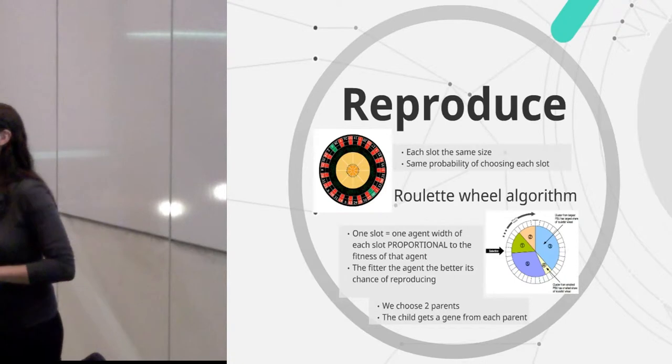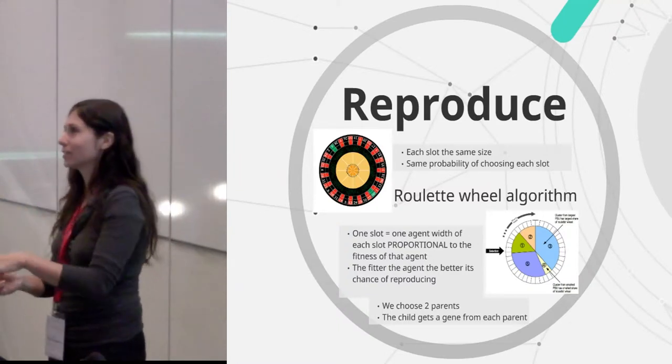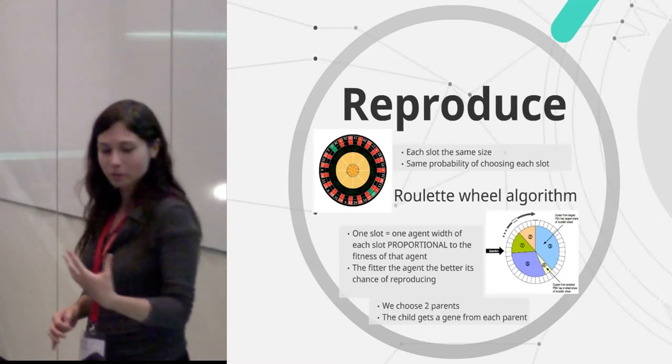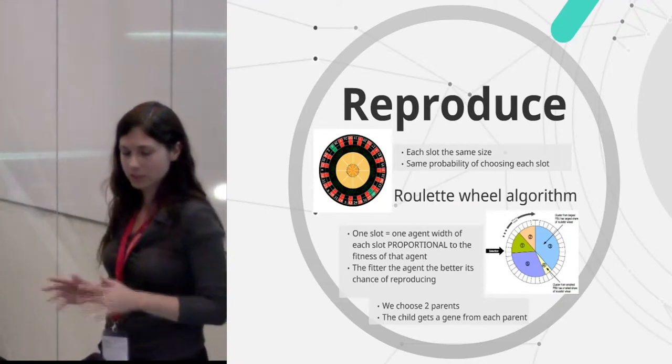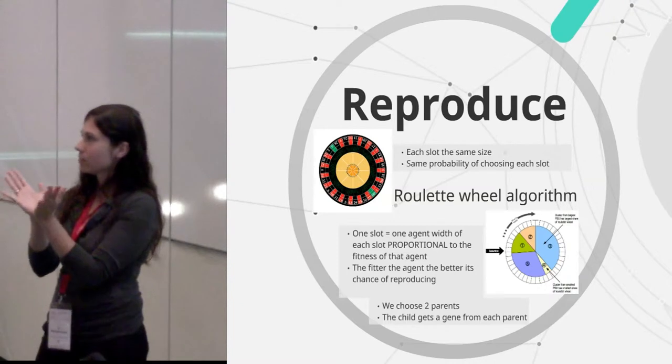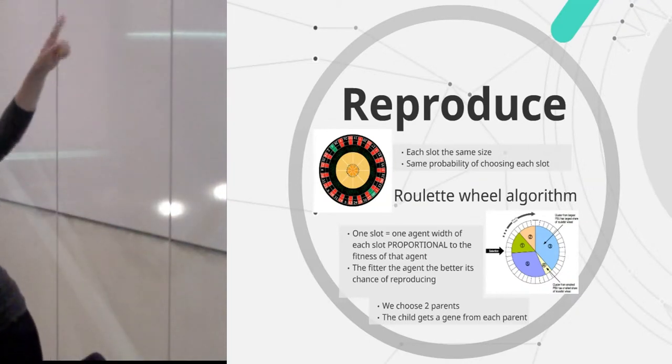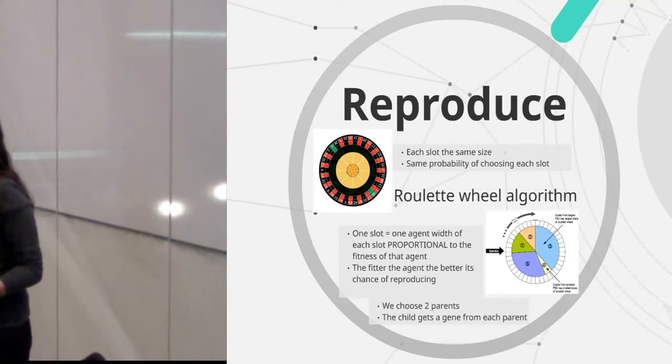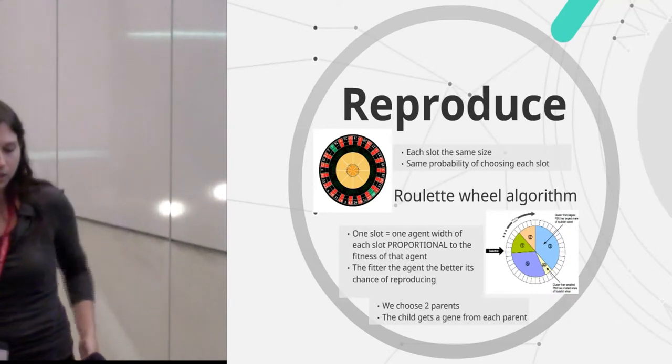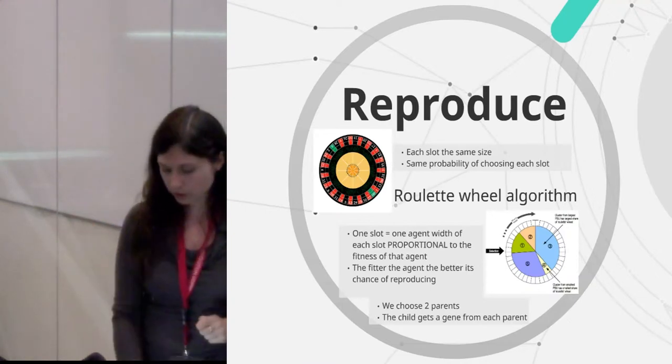And I used a very common algorithm used in computer science and in other disciplines called the roulette wheel in order to model the reproduction. So when you imagine a roulette wheel, a standard one, each slot has the same size, at least you hope because that's what you're putting your money on. So each slot has the same probability of the ball falling into that slot. And the roulette wheel algorithm is a little bit different. So each slot is one agent, but each slot has a different size depending on how good the fitness of that individual is. So the result is that the blue guy there, the number three, he has the best chance of having a child. However, it doesn't preclude the poorly adapted guys from also having occasionally a child. It's just in the grand scheme of things, in the long run, it will happen less often. So I use the roulette wheel and I choose two parents with that. And then the child gets one gene from each parent chosen at random.